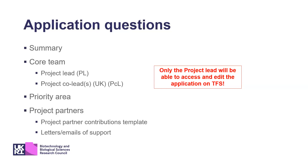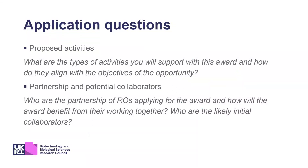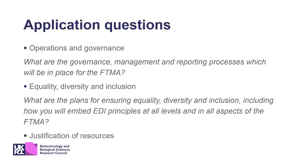You will also have to highlight the priority area your project will focus on and include support letters from all project partners — either a letter or email of support. The main questions are five. The first is on proposed activities: describe which activities you will support and how they align with the objectives of the opportunity. The second is on the partnership and potential collaborators, focusing on which arrows make up the partnership and how the award may benefit from those arrows working together, and which are the likely mission collaborators.